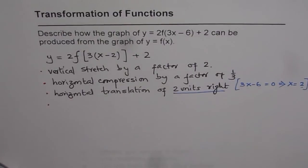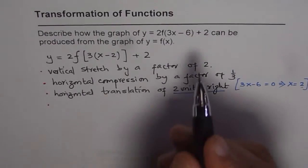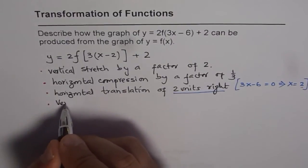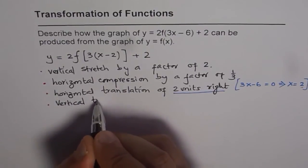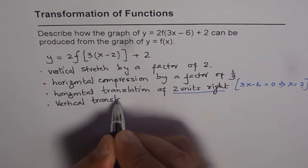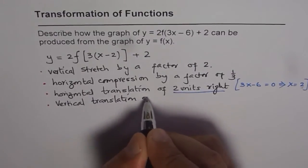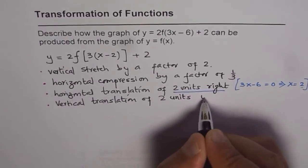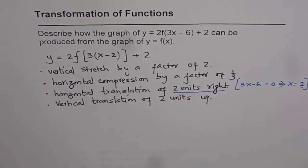Now, let's talk about one more thing, which is the number 2 here. This relates to vertical translation of 2 units up. So that is how you can describe the transformation.